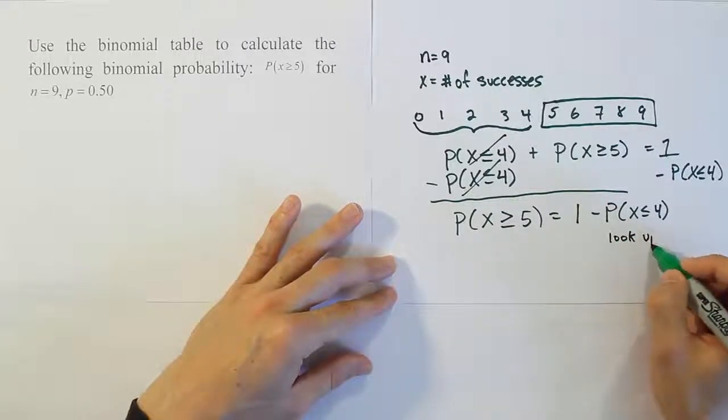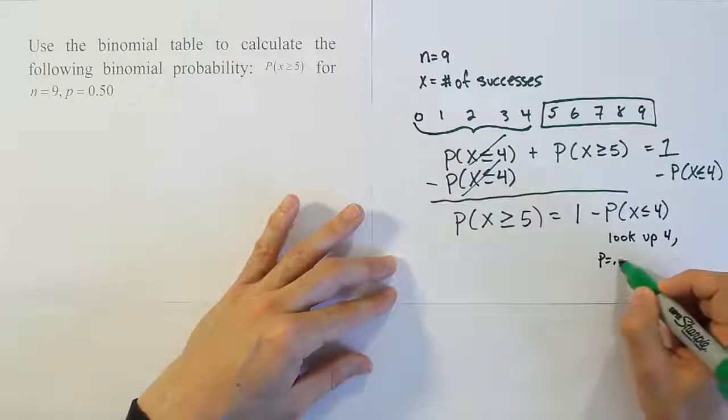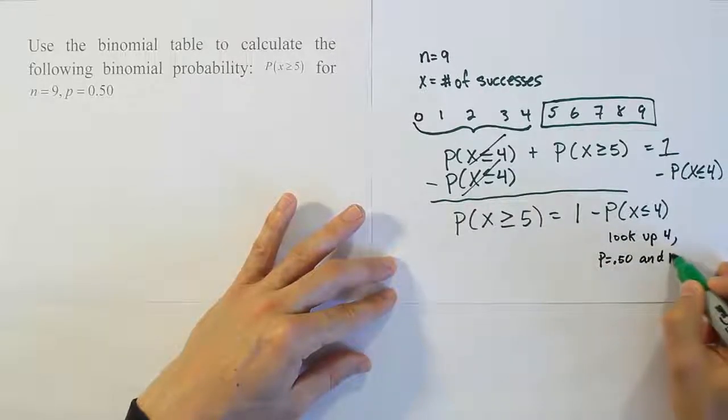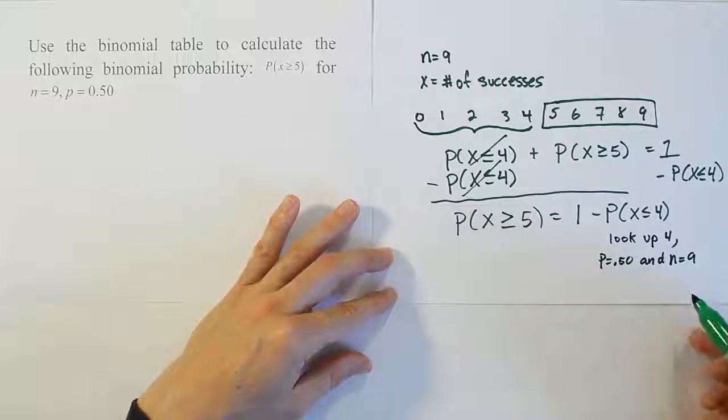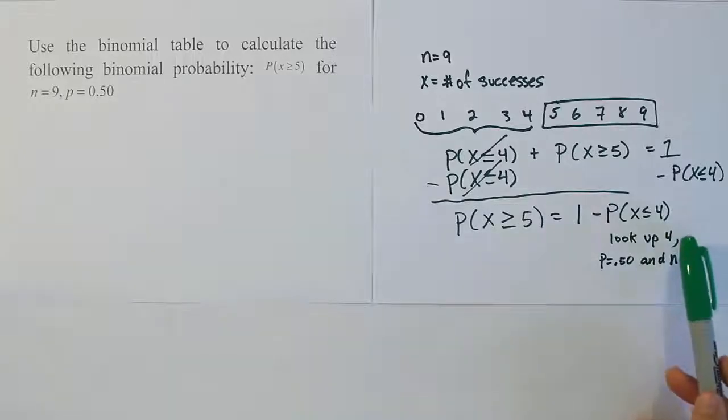look up p equals 0.5, and of course, n is equal to 9. And when I do that, I'll subtract my answer from 1 and I'll have the solution for the problem. So let's go look at our table now to get these numbers that we need. We're looking up 4, 50% for p, and n equals 9.